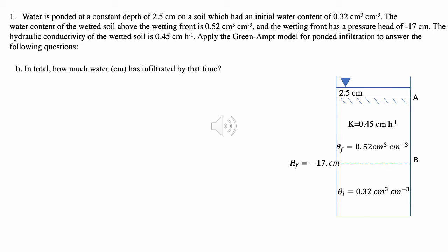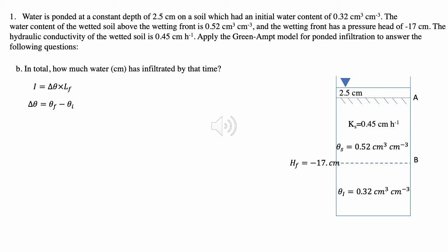The second part of the question asks: in total, how much water in centimeters has infiltrated by that time? We will use the equation that the Green-Ampt model provides for cumulative infiltration, which is capital I equals delta theta — the change in volumetric water content — times LF, which is the distance between the soil surface and the wetting front.